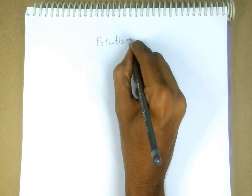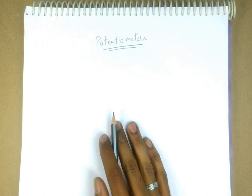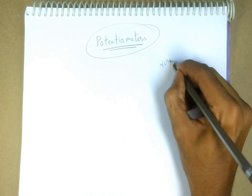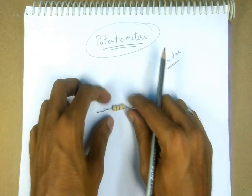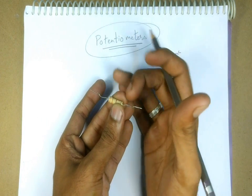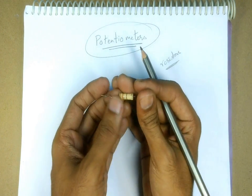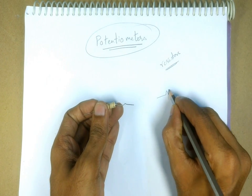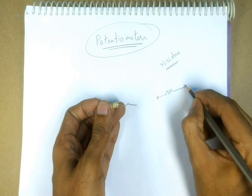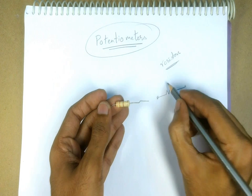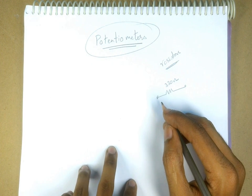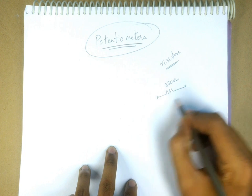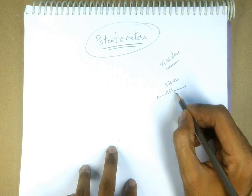Today we will be talking about potentiometers. But before that, we will speak about resistors. This is a simple resistor. It has two terminals, and the resistance between these two terminals is constant. It is shown with this symbol, and here this is a 330 ohm resistor. We can use this resistance in scenarios where we need a constant 330 ohm resistance.